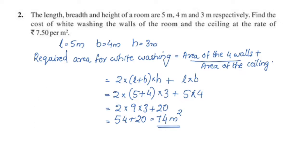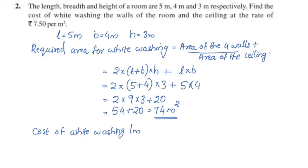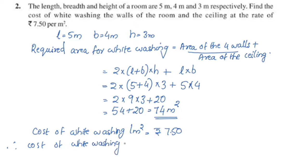For the cost of whitewashing: 1 m² is equal to Rs. 7.50. So for 74 m², cost of whitewashing equals 74 multiplied by 7.50.